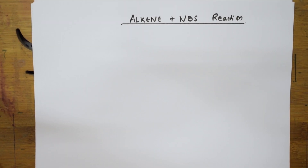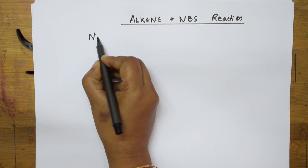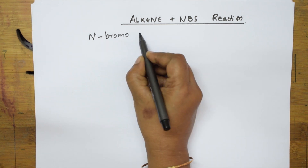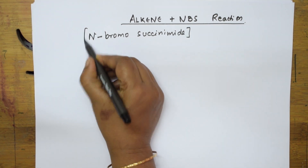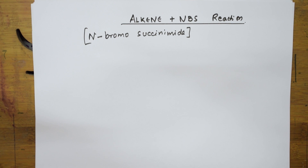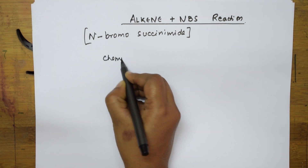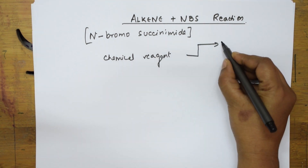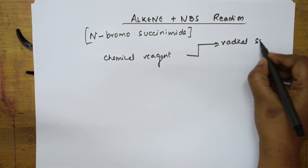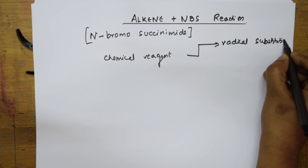Welcome students to one more session of your alkene reaction. Now we are going to study an important reaction of alkene — alkene plus NBS reaction. What is NBS? NBS stands for N-bromosuccinamide. NBS is a chemical reagent used in chemistry wherever there is a free radical substitution reaction.